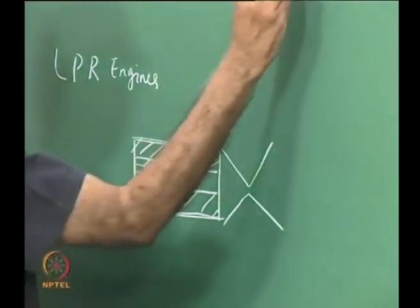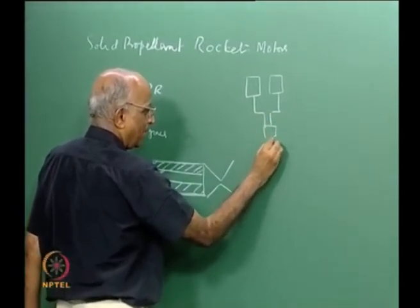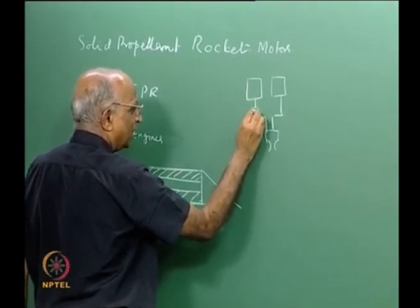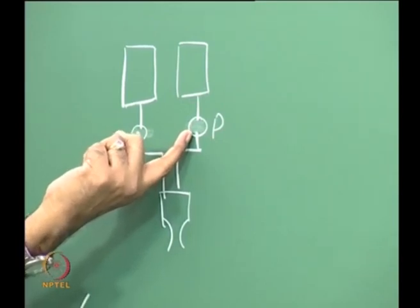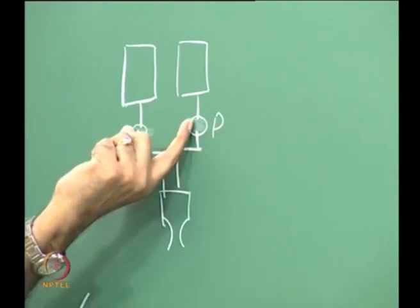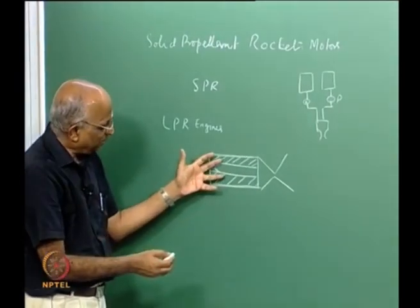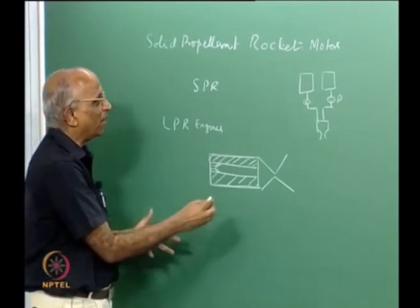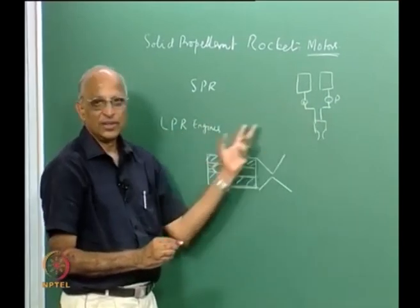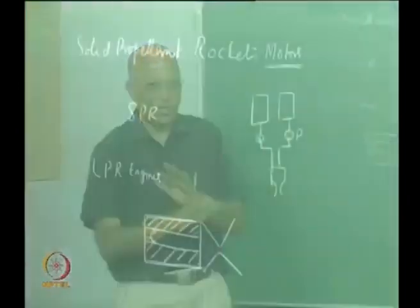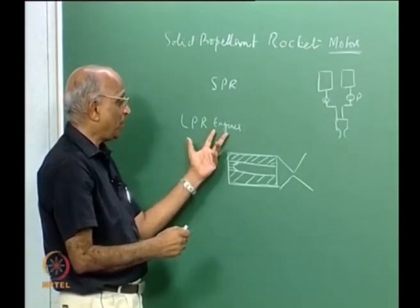In a liquid propellant rocket engine, I need tanks to carry the liquid, lines to supply it to the chamber, and a pump to pump the liquid fuel. I also need a turbine to drive the pump. So a liquid propellant rocket has moving parts, whereas a solid propellant rocket has no moving parts — it is just a simple case. Therefore, a solid propellant rocket, because it has no moving parts, is referred to as a motor, and the case is called the motor case. A liquid propellant rocket, having moving parts, is referred to as an engine.